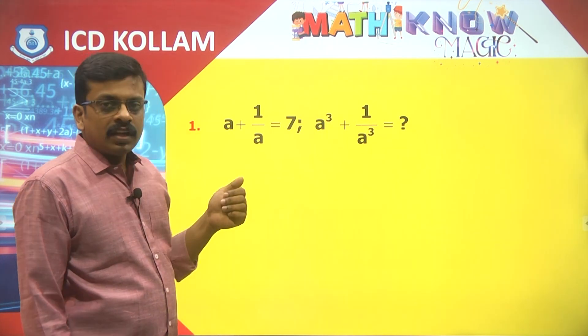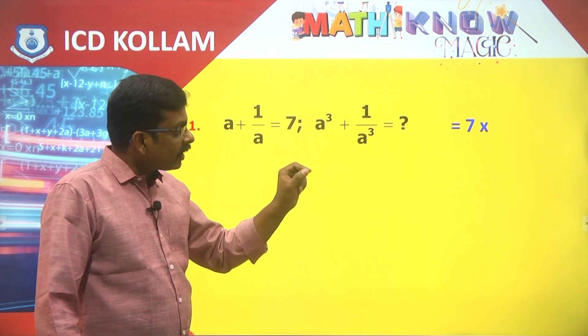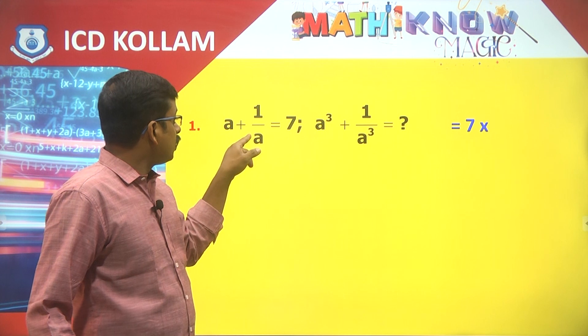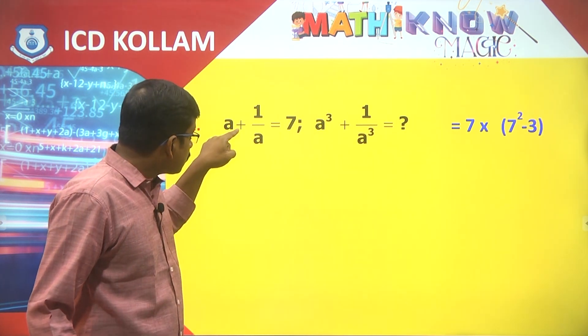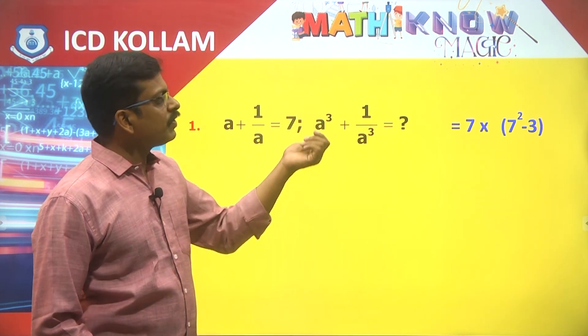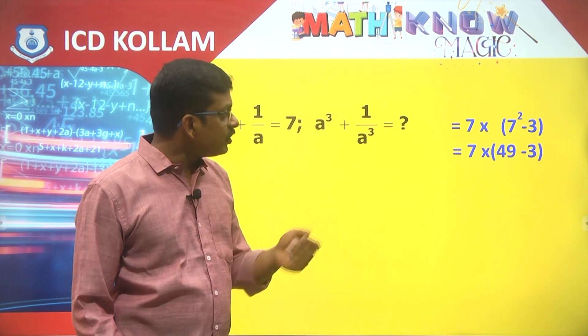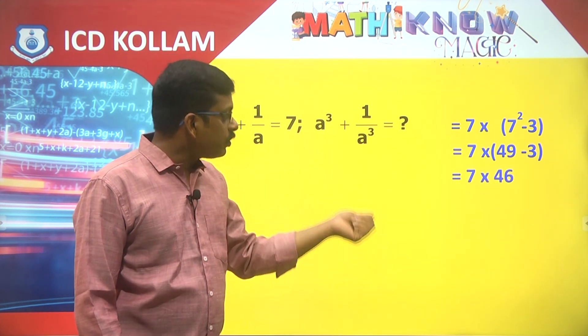Now, 7 into 7 square minus 3. If it is plus then minus 3. Please note that this is plus then this will be minus. 7 into 7 square minus 3 is 49 minus 3, 46, 322 answer.